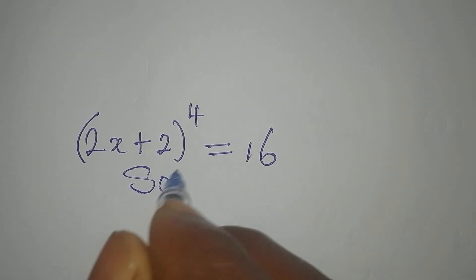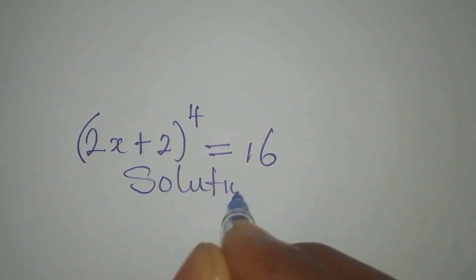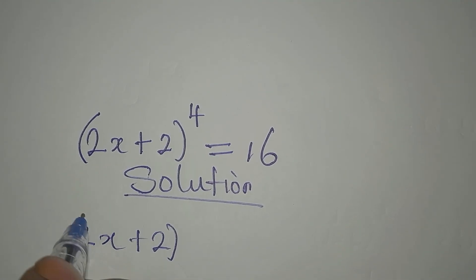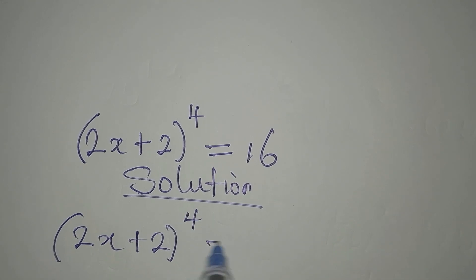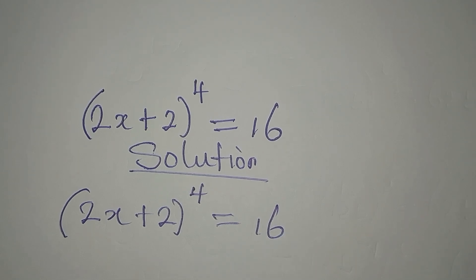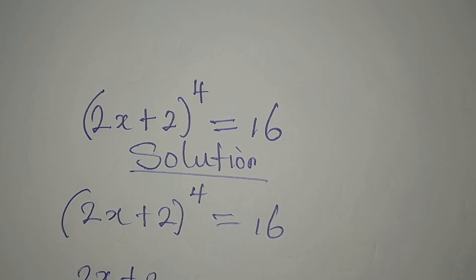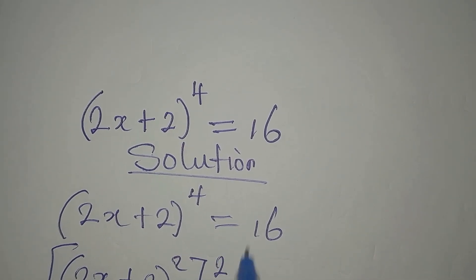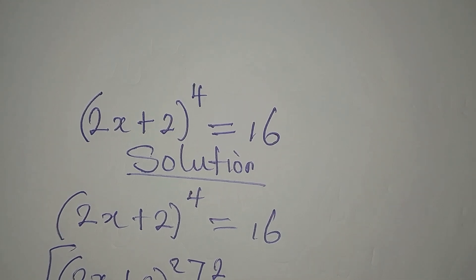We have this problem to deal with: (2x+2)^4 = 16. The first step I want to take is to express this as a power of 2. So from here I'm going to have (2x+2)^2, and this is also having a power of 2 — I have broken the exponent of 4 into 2 times 2.